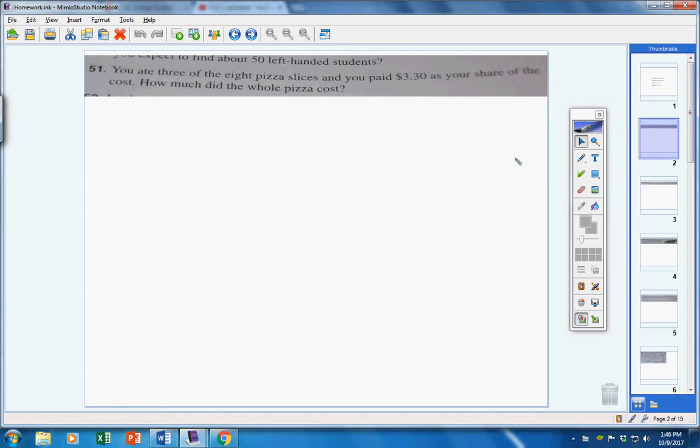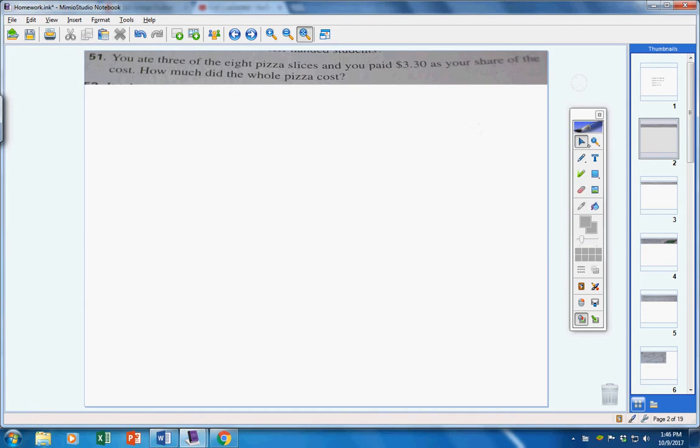51 says you ate three-eighths. You ate three of the eight pieces of pizza, and you paid $3.30 for your share. How much did the whole pizza cost? Personally, I'm thinking proportions. I have three pieces cost $3.30. It says you ate three out of the eight slices. So, if I want to know the cost of the whole pizza, three pieces is $3.30, so eight pieces would be X dollars.